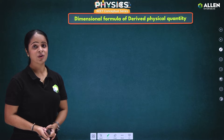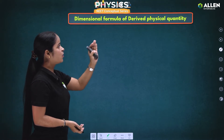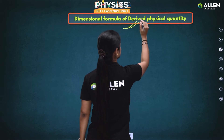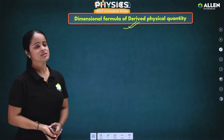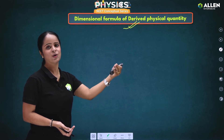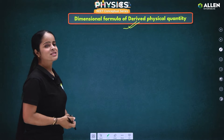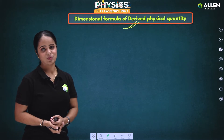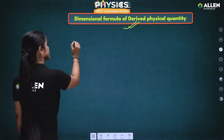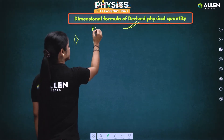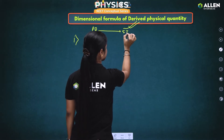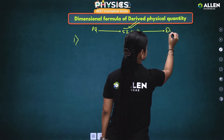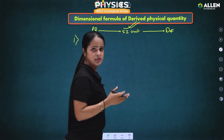Now let's move ahead to dimensional formula of derived physical quantity. Any physical quantity other than fundamental or base physical quantities will be considered as a derived physical quantity. In order to write dimensional formula for derived quantities, we are going to consider a few examples. I will write the physical quantity, its SI unit, and then its dimensional formula, which I am representing by the symbol D.F.